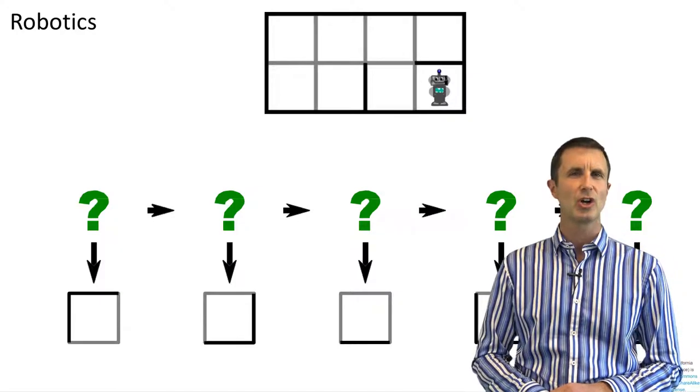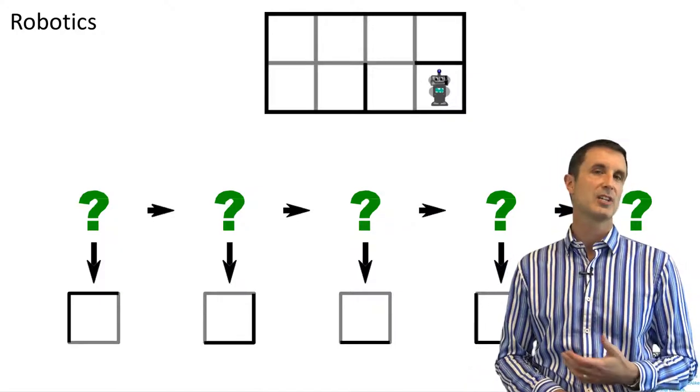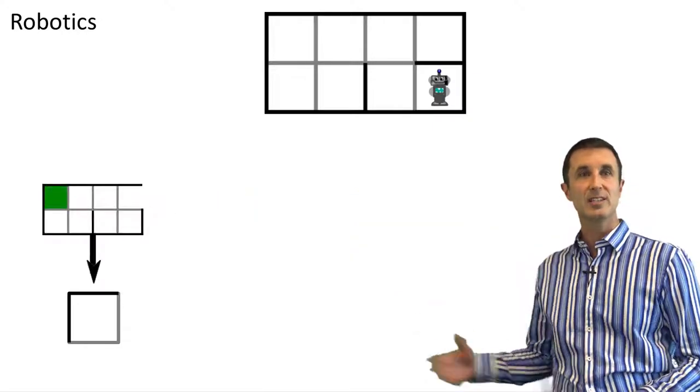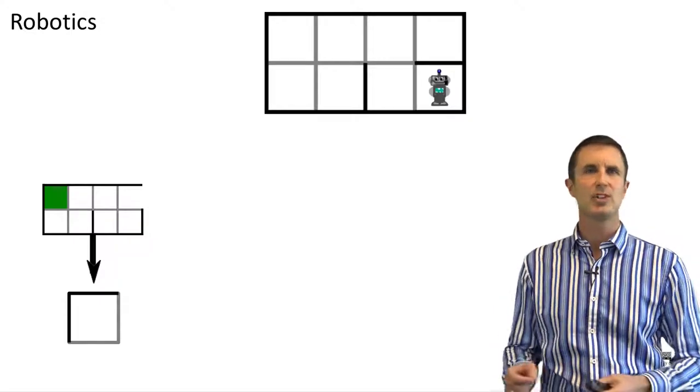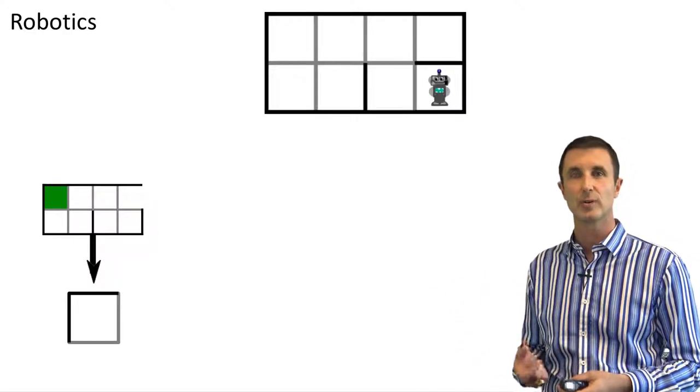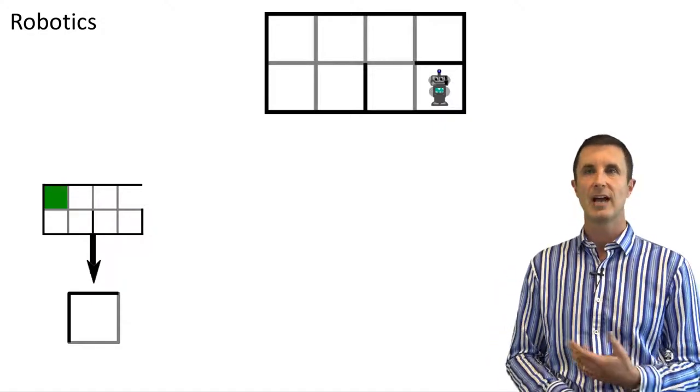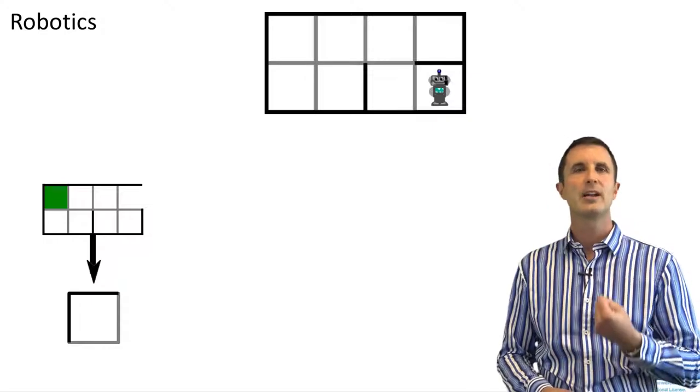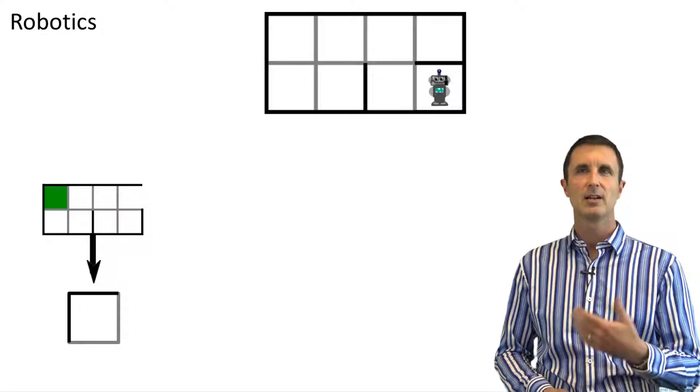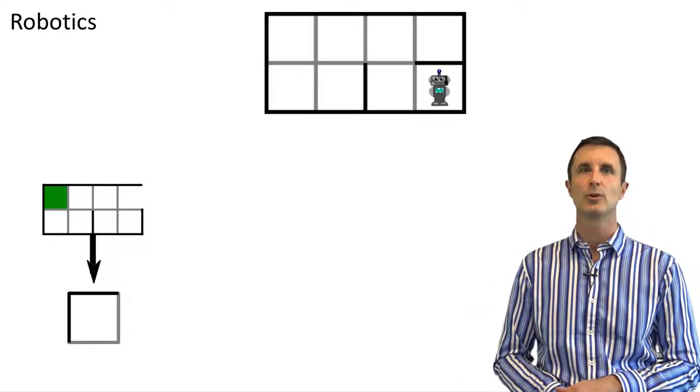But the problem is those sensors aren't actually perfect. So there's some chance that the sensor will report the wrong thing. So now, if you look at this sequence here, there's actually no sequence of moves that would have generated that sequence of sensor readings exactly, and that's because those sensor readings have been corrupted by noise, and I need to be able to process this. So I don't know for certain where I am, but I need some probability distribution over where I am that describes my uncertainty as it's related to those noisy measurements I've made about the world.